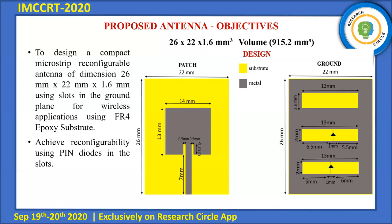Going on with the design, I have used a rectangular patch of 13×14 mm on the patch region, and also used an inset feed to improve the S11 and the performance of the antenna. On the ground plane, I have incorporated slots. Slots are placed based on the current distribution, typically on the regions with higher current density. I have also incorporated different PIN diodes — specifically BAP6503 PIN diodes — in the slots, with slot dimensions as shown.